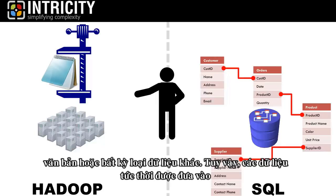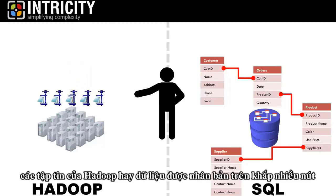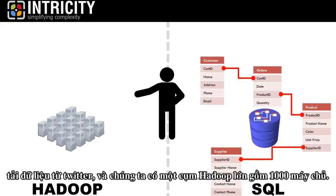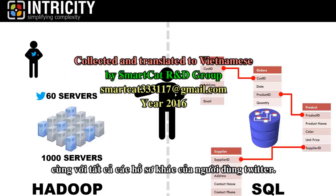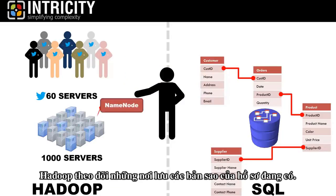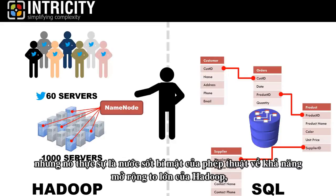However, the moment the data enters into Hadoop, the file or data is replicated across multiple nodes in the Hadoop distributed filing system. So, for example, let's say that we're loading Twitter data and we have a large Hadoop cluster of a thousand servers. My Twitter data might be replicated across 60 of them, along with all the other profiles of Twitter users. Now, Hadoop keeps track of where all the copies of my profile are. This seems like a waste of space, but it's actually the secret sauce to the massive scalability magic in Hadoop.